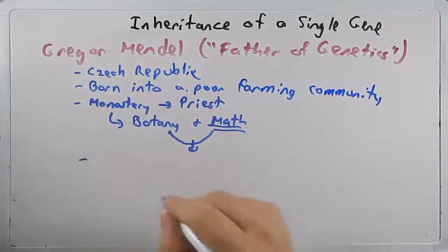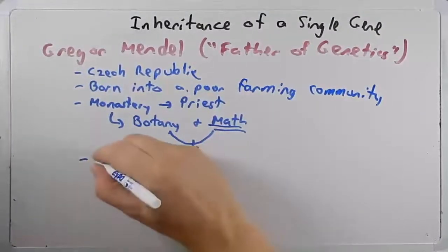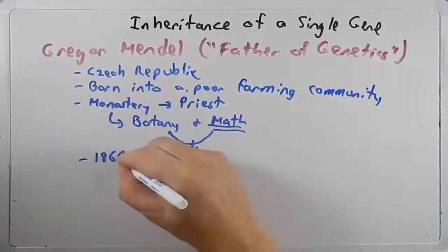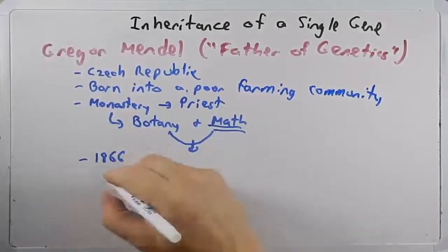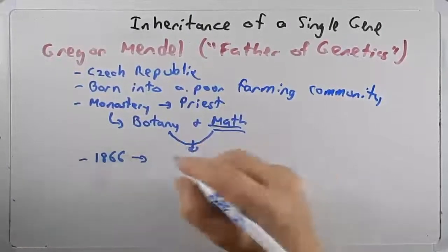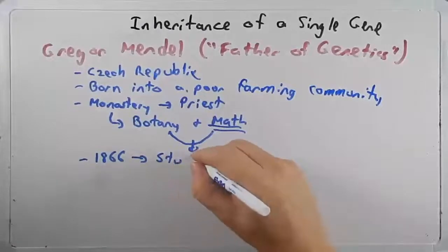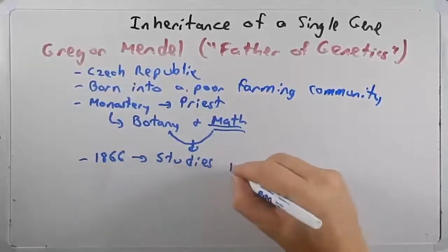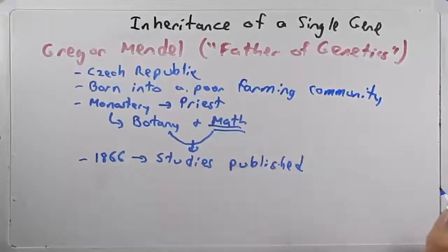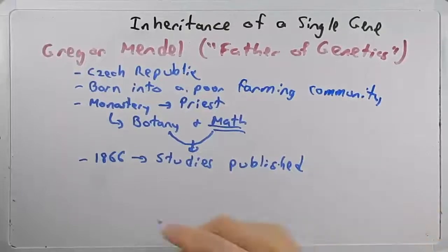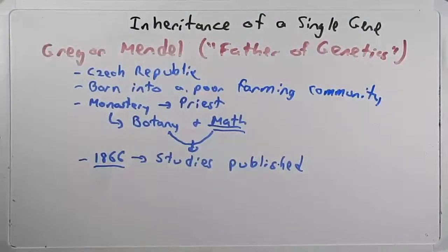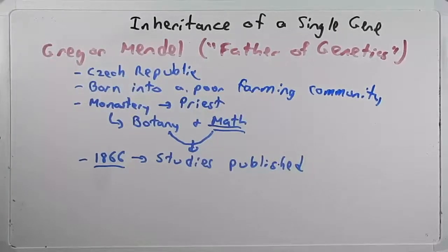He was able to make similar observations that other people made, but he was able to apply math and logic and statistics to it to make some really interesting predictions. His initial pea studies that he published were in 1866. A few years after that, studies published.